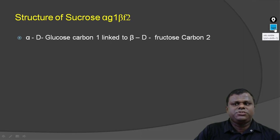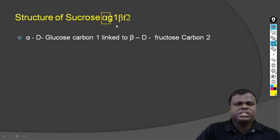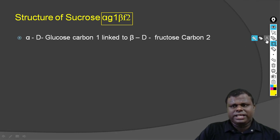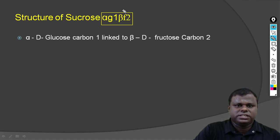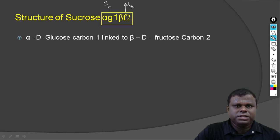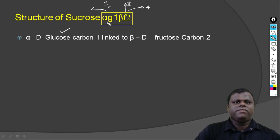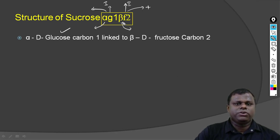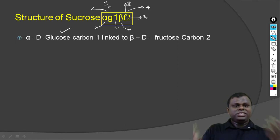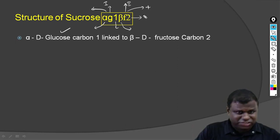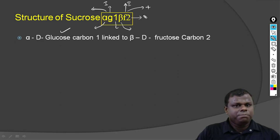Here we have the structure of sucrose. Sucrose is alpha-G1 beta-F2. When I write alpha G1, G is the first monosaccharide — glucose — and F is the second monosaccharide — fructose. Alpha G1 means glucose is in alpha form, and beta F2 means fructose is in beta form. The carbons that are linked are 1 and 2. This is how we understand what exactly the structure is — very simple to understand.